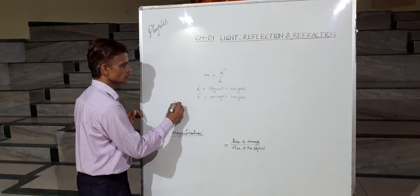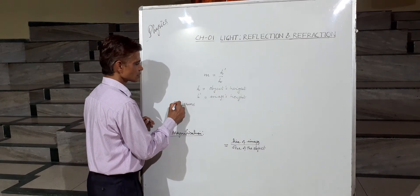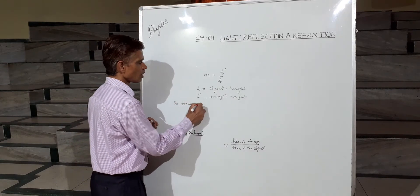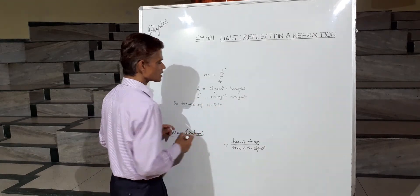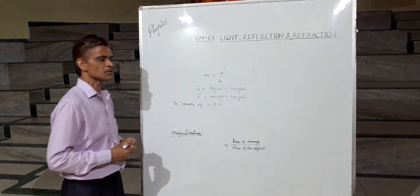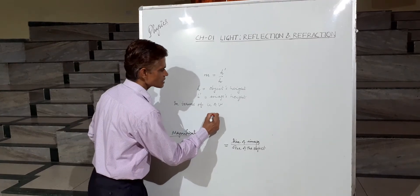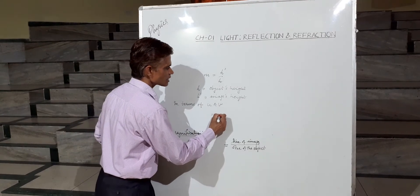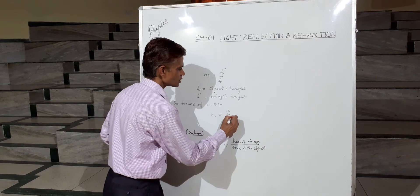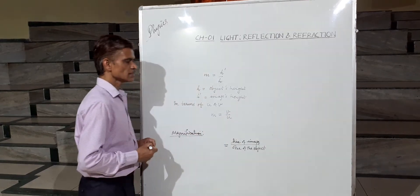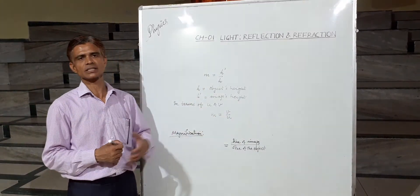In terms of u and v — object distance and image distance — magnification is defined as the ratio of v to u, that is, image distance to object distance.